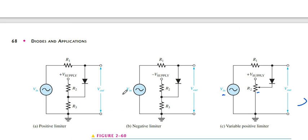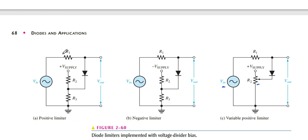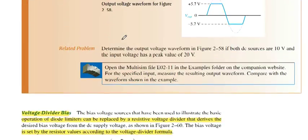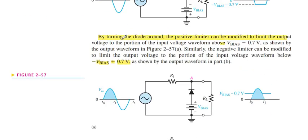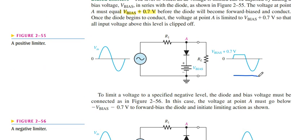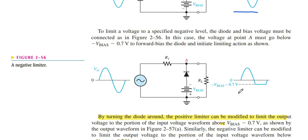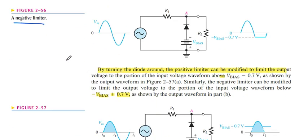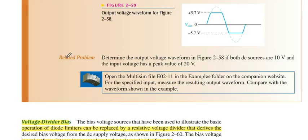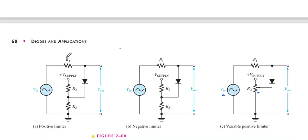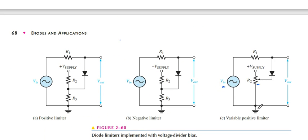This is the voltage divider bias circuit — number one, the positive limiter. The positive limiter means the positive side of the input is cut off, as I mentioned above. This is called the positive limiter. I give the example of this, and this is the negative limiter as mentioned.